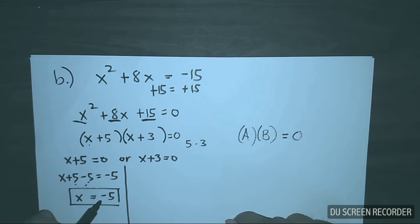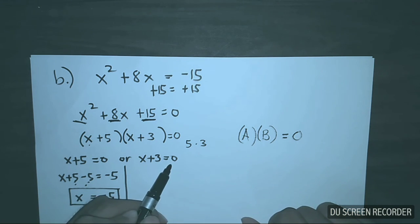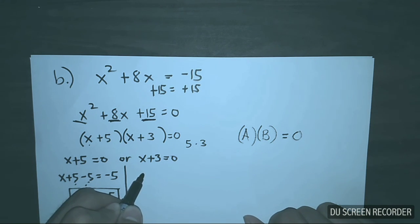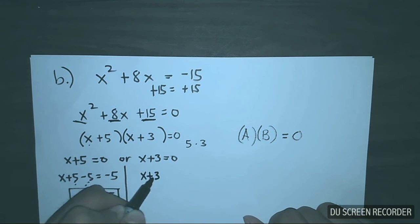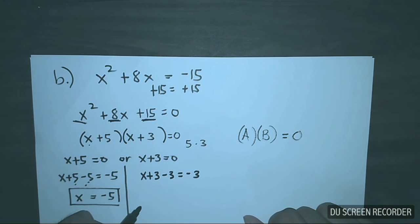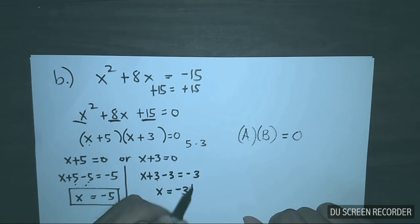That is the first value of x. On the other side, x plus 3 is equal to 0. To solve this, subtract 3 from both sides: x plus 3 minus 3 is equal to negative 3, and 3 minus 3 is equal to 0, so x is equal to negative 3. These are the two possible values of x.